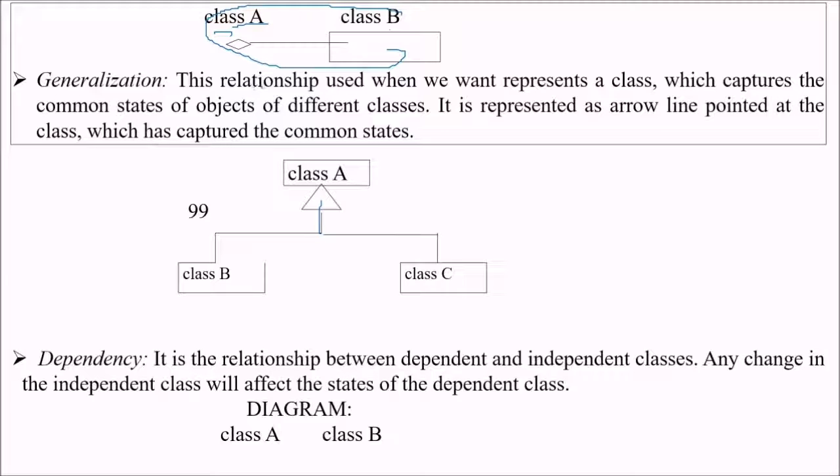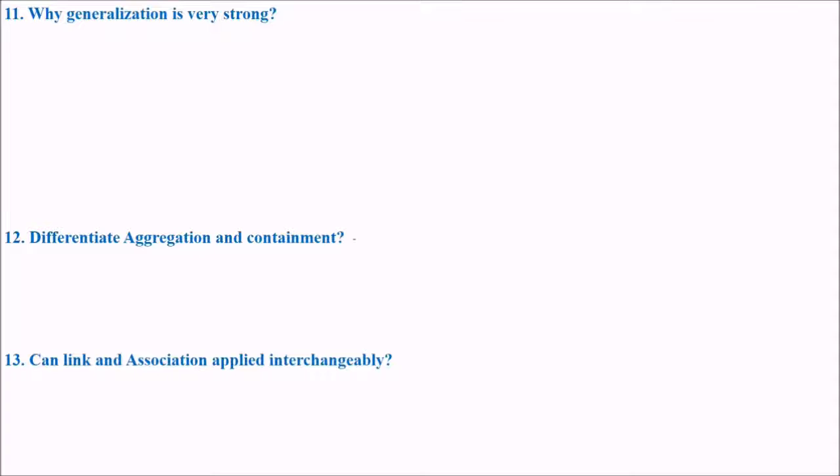Generalization is like this. This relationship is used when we want to represent a class which captures the common states of object of different classes. It is represented as an arrow line pointed at the class which has captured the common states. Dependency is the relationship between dependent and independent classes. Any change in the independent class will affect the states of the dependent class.